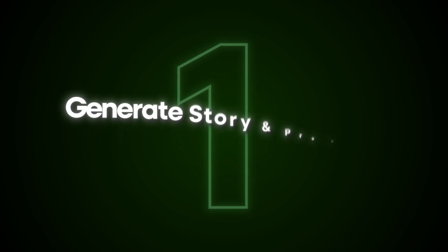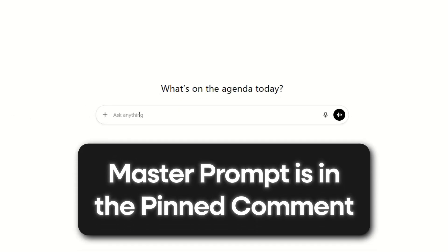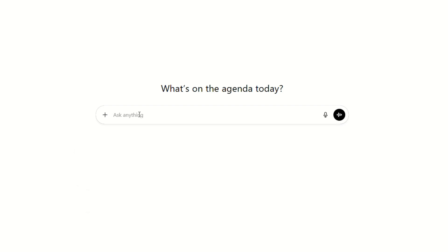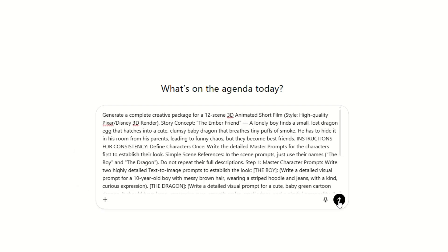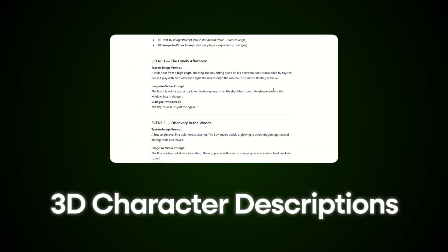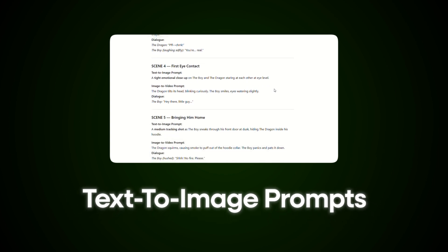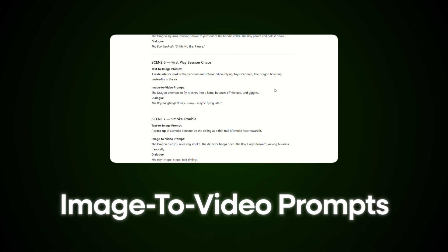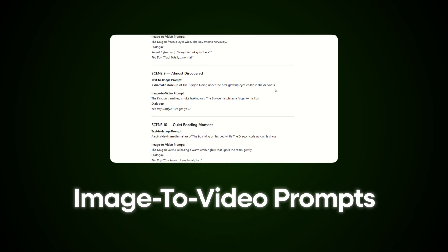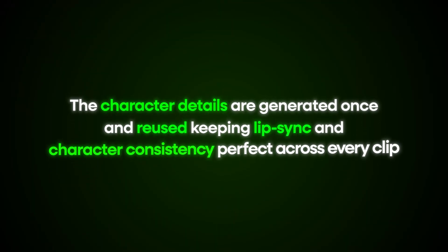First, we'll create the story and prompts using ChatGPT. Grab the master prompt from the pinned comment, paste it into ChatGPT and hit generate. In seconds you'll get a complete story script, clean 3D character descriptions, text-to-image prompts for characters and scenes, and image-to-video prompts with dialogue already included. The character details are generated once and reused, keeping lip sync and character consistency perfect across every clip.